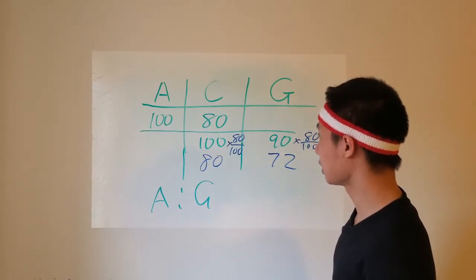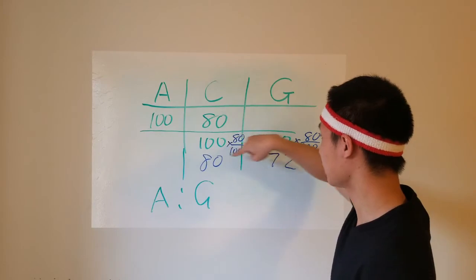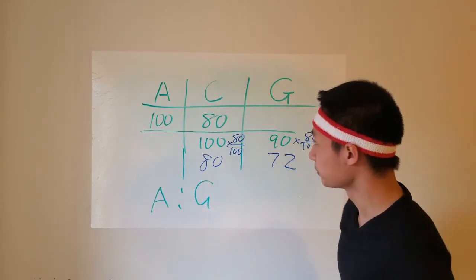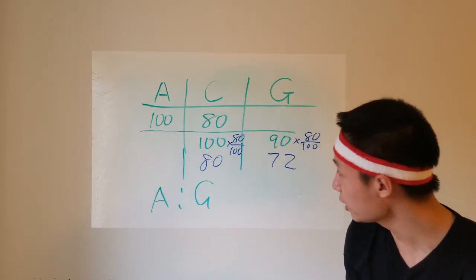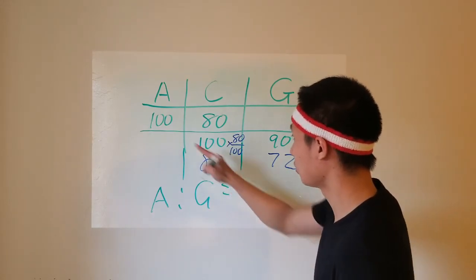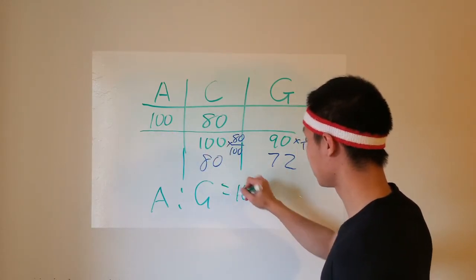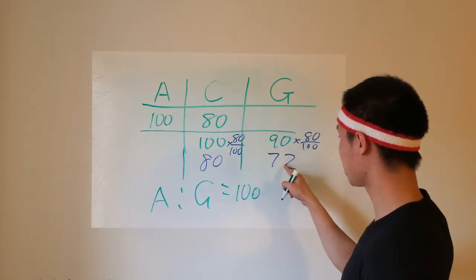So therefore, these two ratios now form a common ratio. So the ratio of A to G becomes 100 to 72.